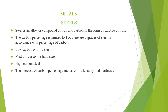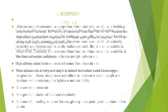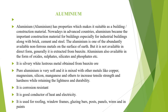Next we are going to see about metal. In metals we have different varieties like steel and aluminium. Steel is a compound of iron and carbon used in construction. The carbon percentage is limited to 1.3 to 3 grades. Steel types include low carbon, mild steel, medium carbon, and high carbon steels. Aluminium is used as a building material for rod making, wall and window construction. Aluminium is lightweight and a good electrical conductor.